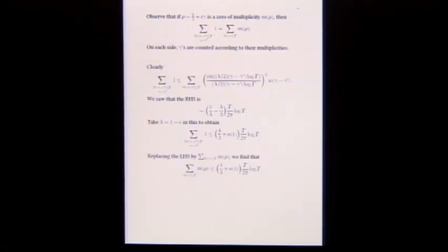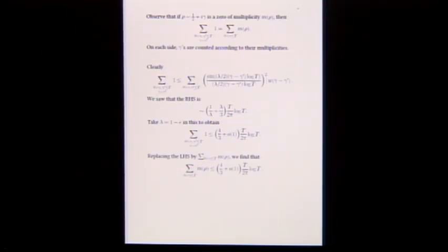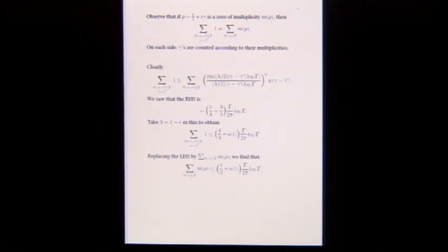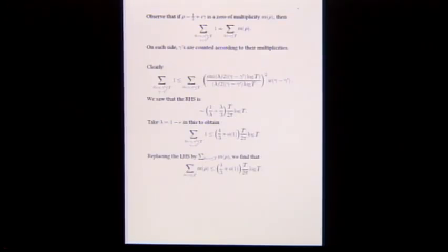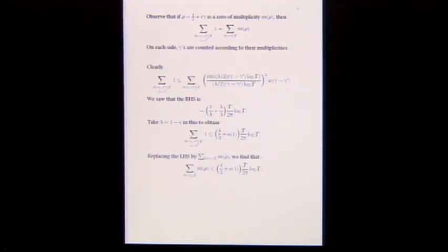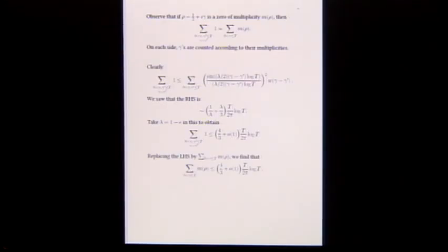Now consider the sum over pairs of ordinates where the ordinates are equal. This sum is bounded by the full double sum expression. Why? Because when gamma equals gamma prime, the weight W factor is 1, and all other terms are non-negative. The double sum over pairs with gamma equal to gamma prime can be rewritten as a sum over the multiplicities of the zeros rho — for each zero one-half plus i gamma, count gamma prime as many times as its multiplicity.